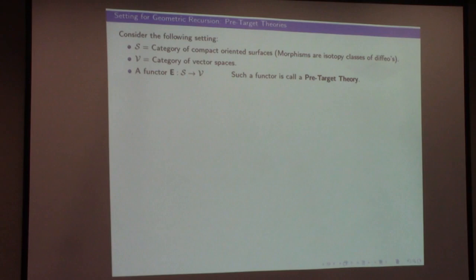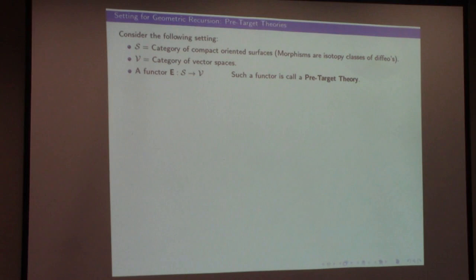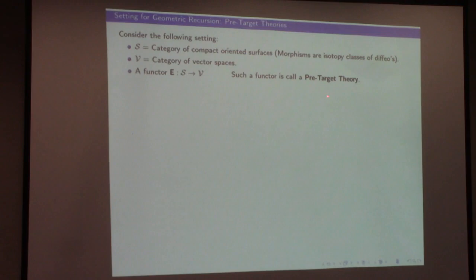I'd like you to consider the category of compact oriented surfaces. These are two-dimensional manifolds with boundary — surfaces of some genus with a number of boundary components. The morphisms are isotopy classes of diffeomorphisms. Then there is another category: the category of vector spaces. A pre-target theory is simply a functor from surfaces to vector spaces — something that assigns a vector space to every surface.